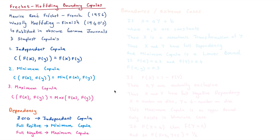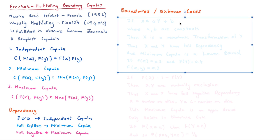Then we have the maximum copula, which represents full negative dependency. This is when one thing happens and the other does not — like flipping a coin: if heads happens, tails cannot happen, so it's fully negative. The minimum and maximum copulas are our boundaries; they are our extreme cases.